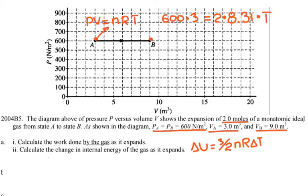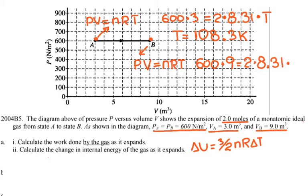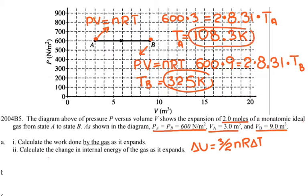For point A: pressure is 600, volume is 3, equals NR times TA. Solving gives TA equal to approximately 108.3 Kelvin. For point B: pressure is still 600, volume is 9, equals NR times TB. TB comes out to approximately 325 Kelvin. I'll round TA to 108 Kelvin and use TB as 325 Kelvin for the calculations.